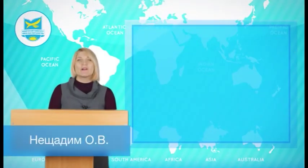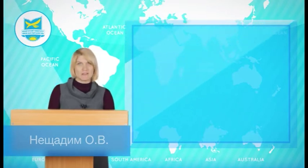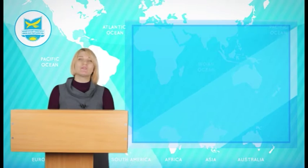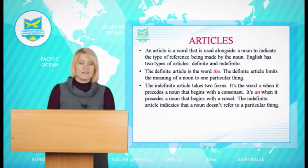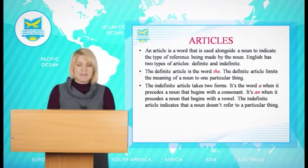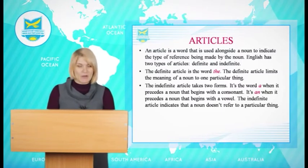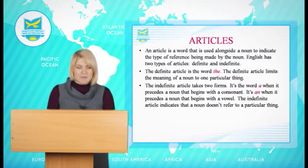Hello! Today we are going to talk about articles, nouns and determinants. Firstly, I will give you the definition of an article. An article is a word that is used alongside a noun to indicate the type of reference being made by the noun — definite or indefinite meaning.